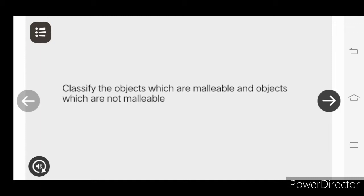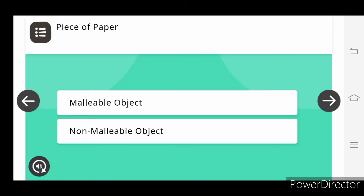Classify the objects which are malleable and which are not malleable. A piece of paper.